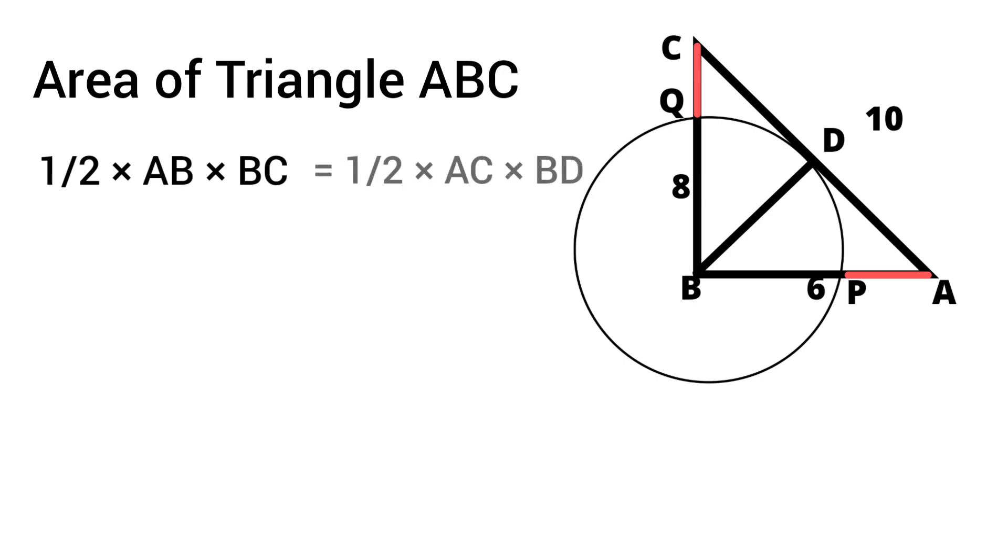So half into AB into BC equals half into AC into BD. Now half gets cancelled on either side. Length of AB is 6 into length of BC is 8 equals to length of AC is 10 into BD. So 48 equals BD into 10.